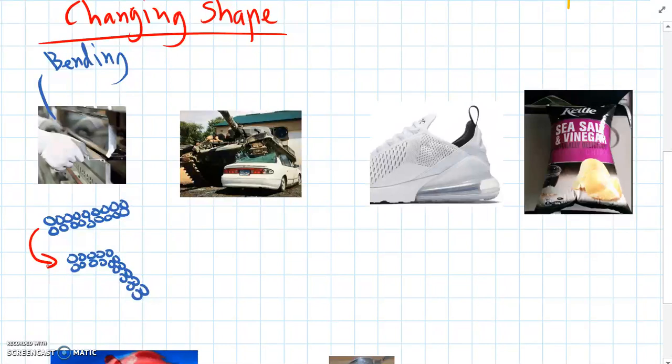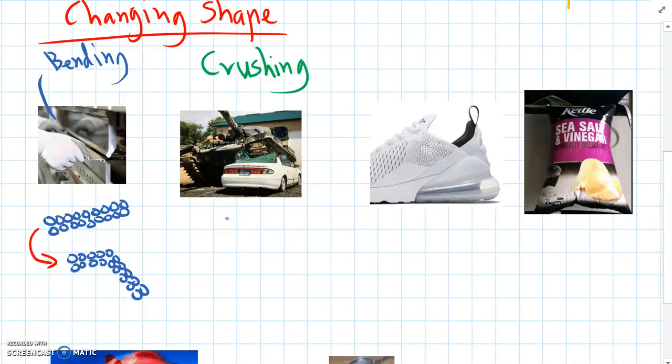We can also have another example where you change the shape of something by crushing it. So if you're unfortunate enough to be nearby a car when it gets crushed by a tank like this, you'll see that all the glass and a lot of the plastic will break into lots of tiny pieces. And this is like the glass example that we had earlier.